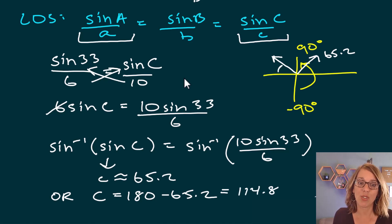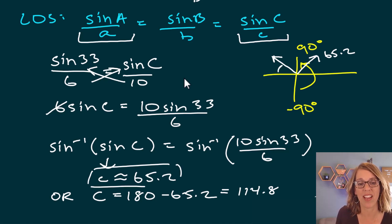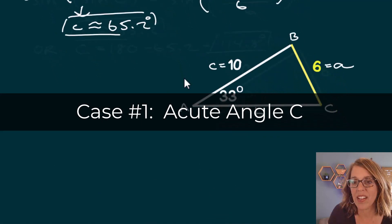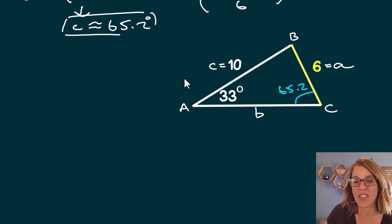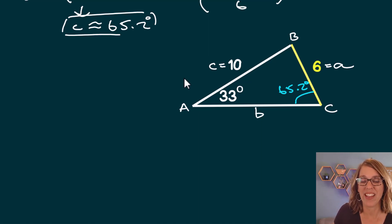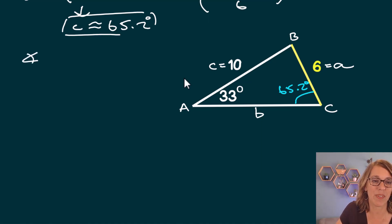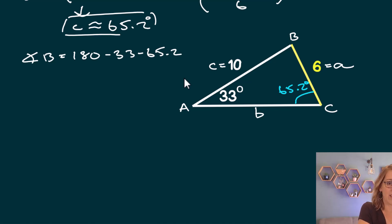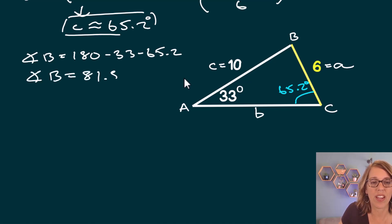This gives us two cases. Case 1 is the acute angle C = 65.2°, and Case 2 is the obtuse angle — found by taking 180° − 65.2° = 114.8°. Let's do the acute angle first. With C = 65.2°, I now need to find angle B. Since all angles in a triangle sum to 180°, angle B = 180° − 33° − 65.2° = 81.8°.